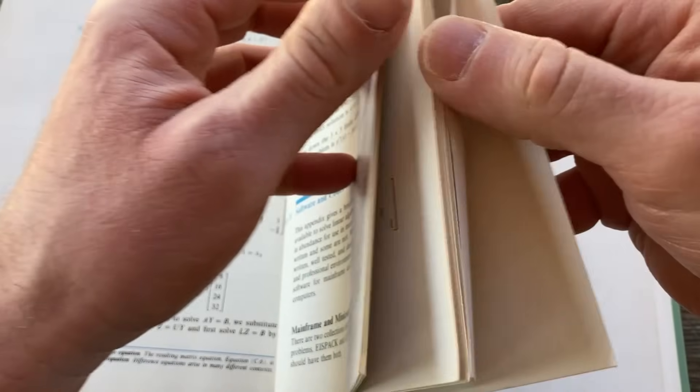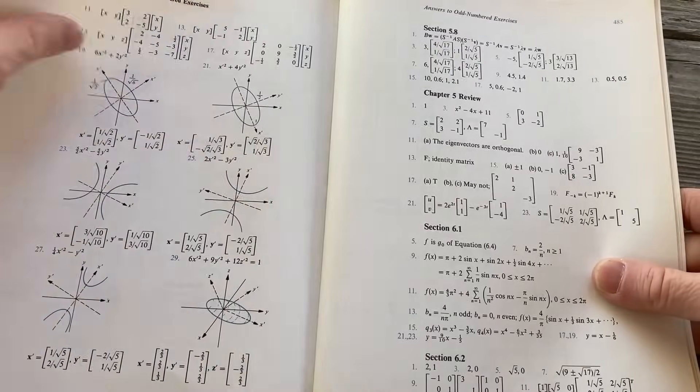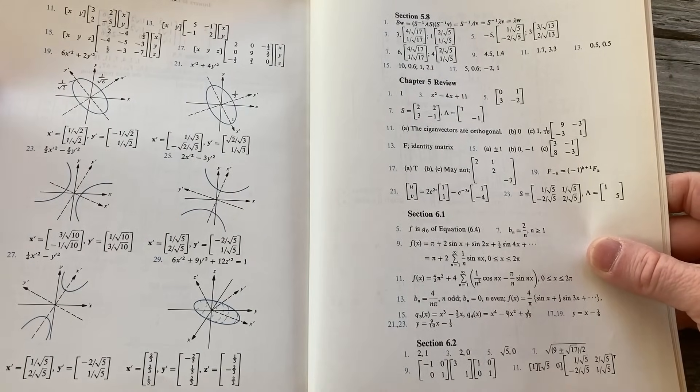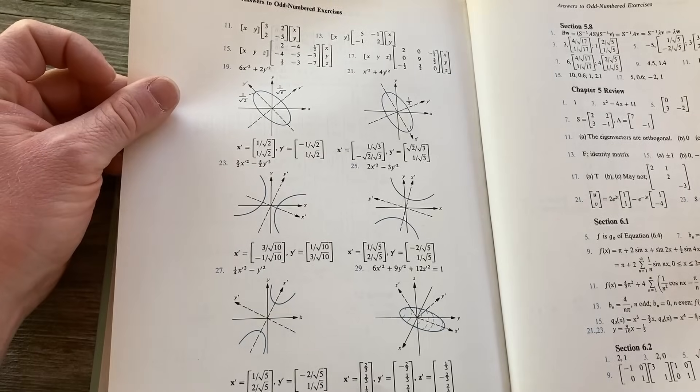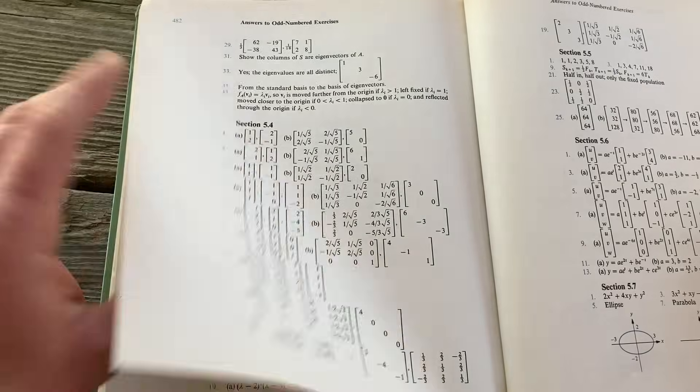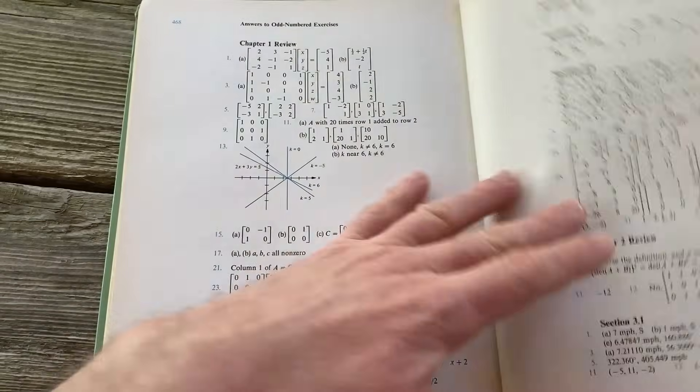So we were looking at the answers. Let's go there. So you can see that there are quite a few. You've got the odd numbered ones. So yeah, even has some graphs and stuff. So excellent, excellent work. Very, very useful for self-study.